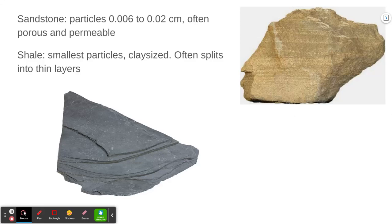Looking at the smaller, finer-grained ones: here's a picture of sandstone, and even in the photograph you can just about see the same-size particles. Often this layering is visible — you can literally see where layers of sediment built up one on top of another. Then over here we have shale. This is the smallest size particles; you can't see them easily with the naked eye, but the rock feels a little gritty. Shale splits into fine, thin layers very easily — it's very flaky, and that's an identifying feature of shale.